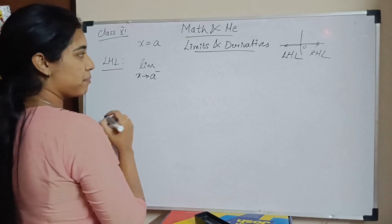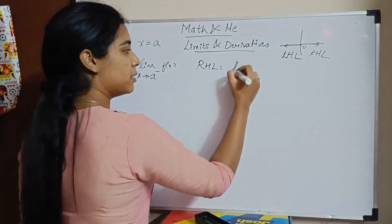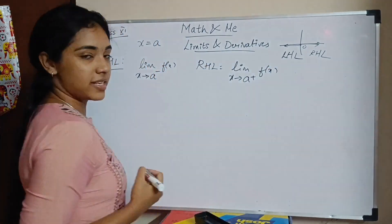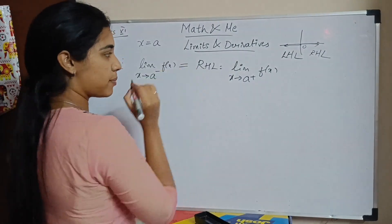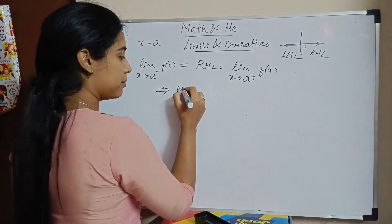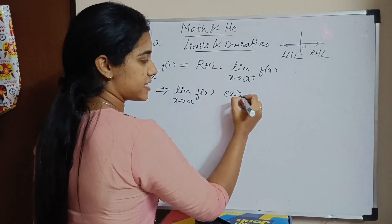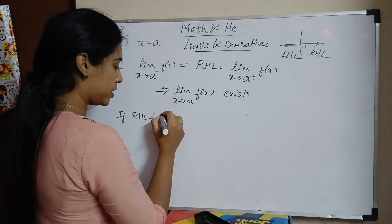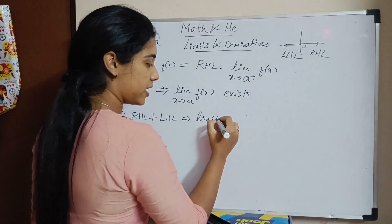Left hand limit is a minus of f of x. What is the right hand limit? Limit x tends to a plus of f of x. When we say left hand limit is equal to right hand limit, we say that limit x tends to a of f of x exists. If right hand limit is not equal to left hand limit, we say that limit does not exist.